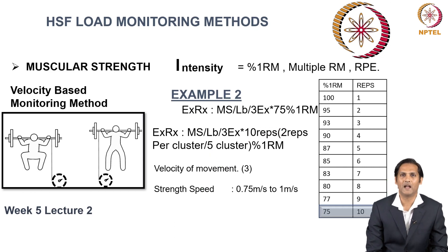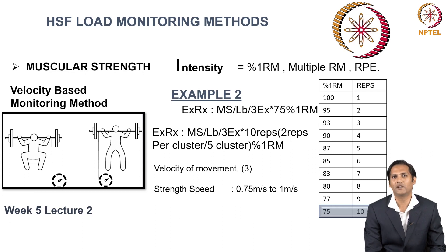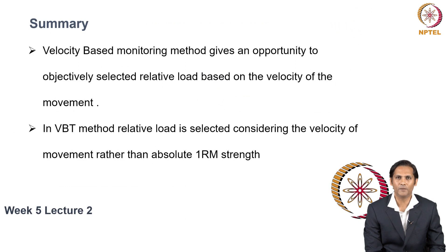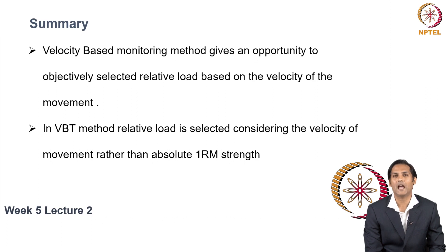This second example shows how you can improve muscular strength by lifting a lighter load at a higher velocity. In summary, the velocity-based monitoring method gives an opportunity to objectively select relative load based on the velocity of movement. In velocity-based training, relative load is selected considering the velocity of movement rather than the absolute 1RM strength.